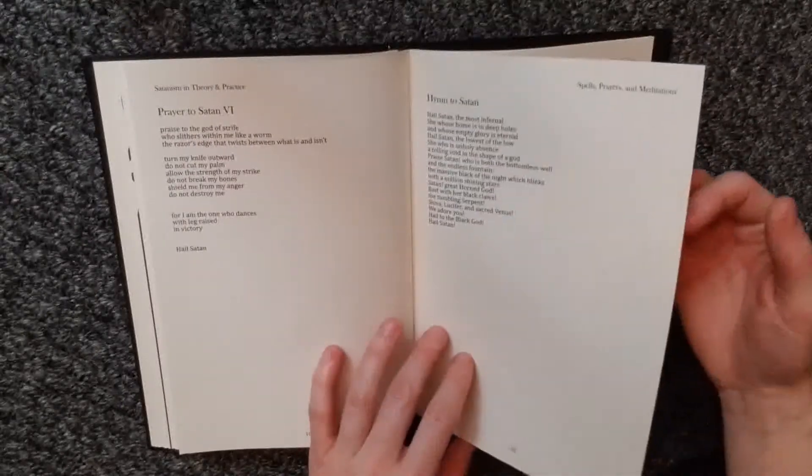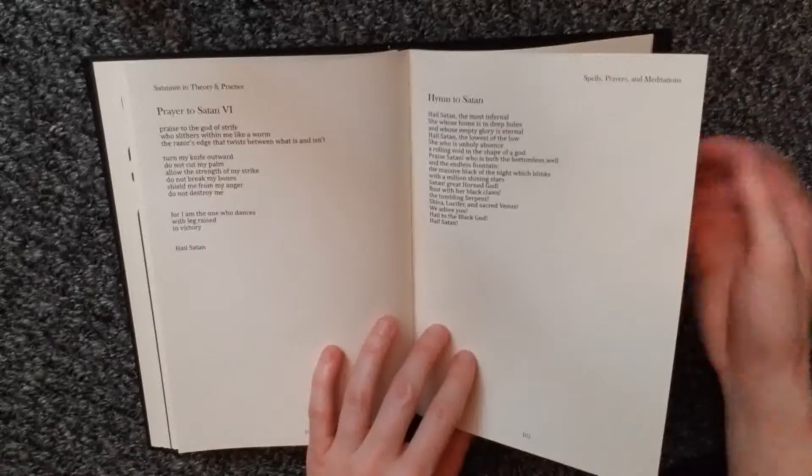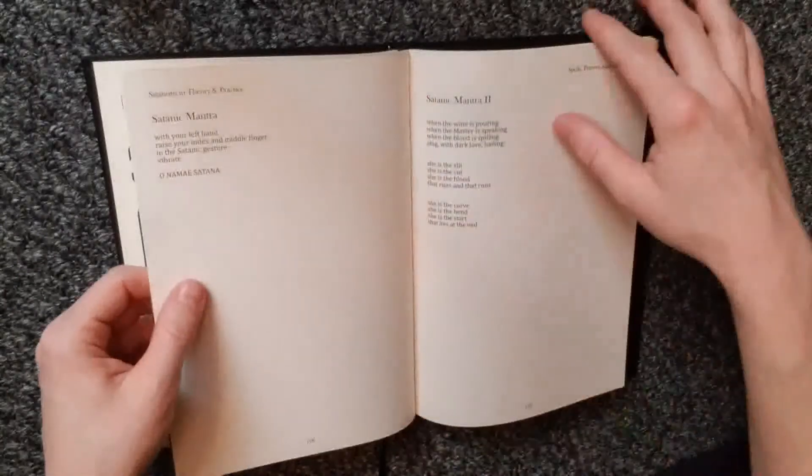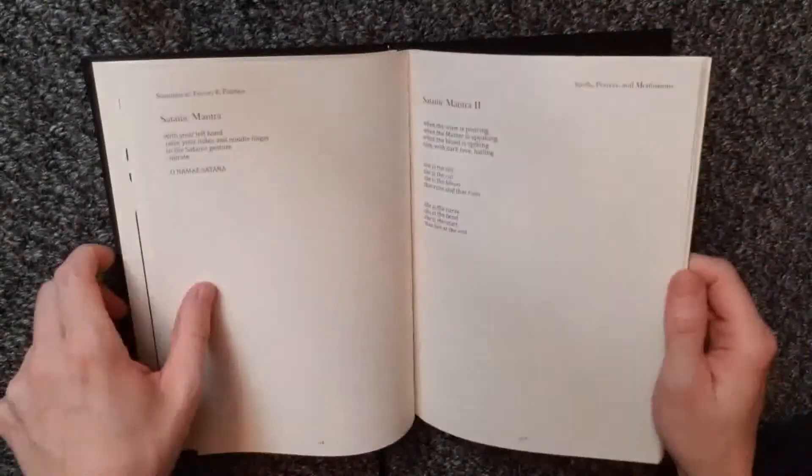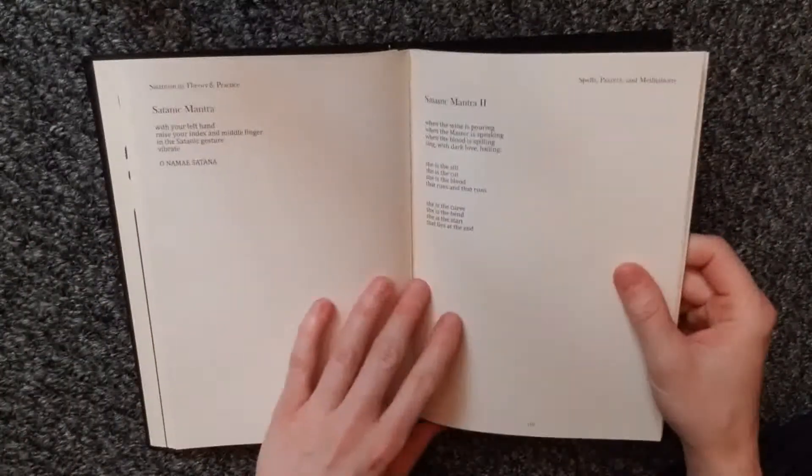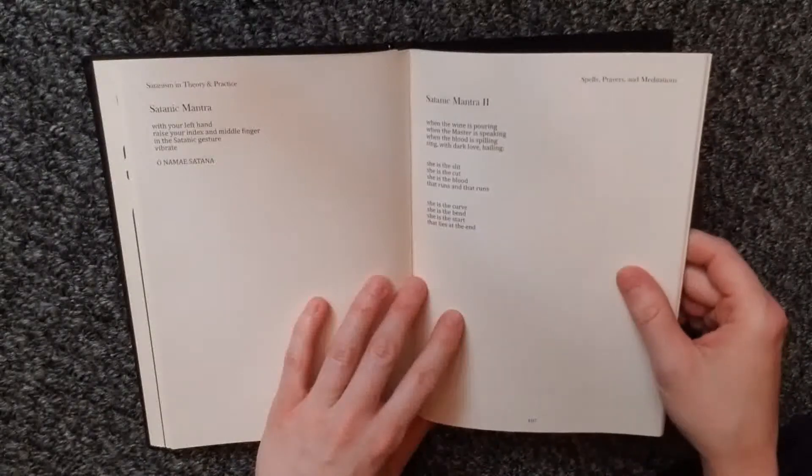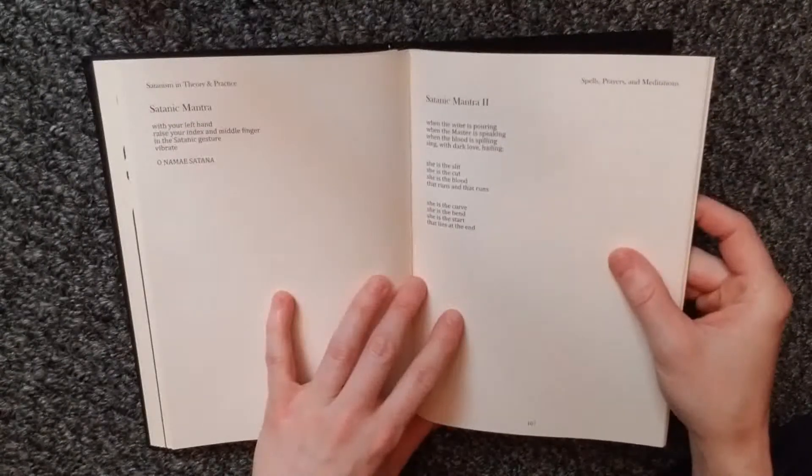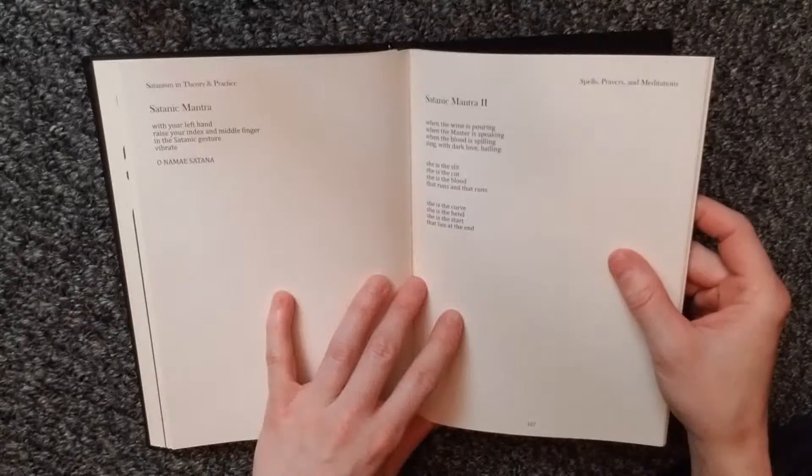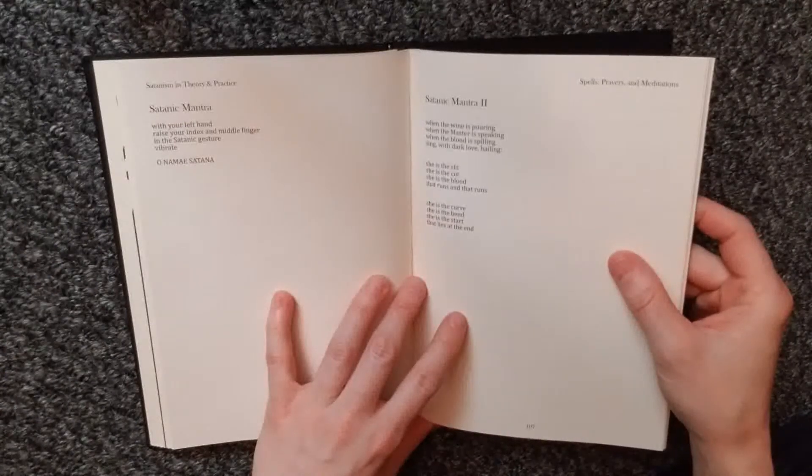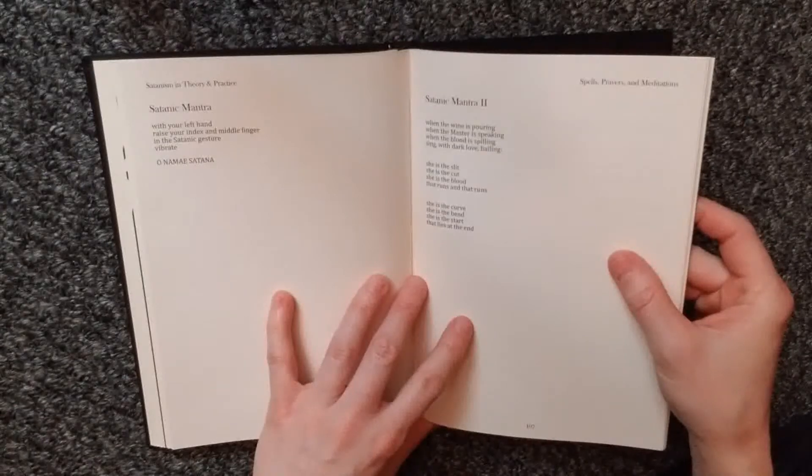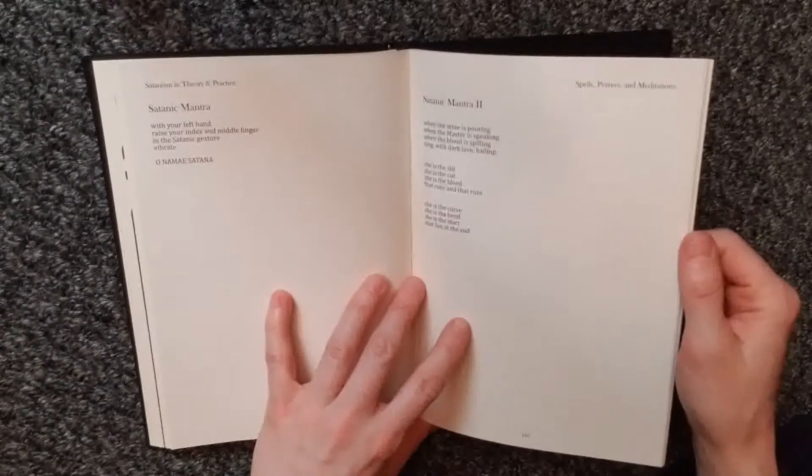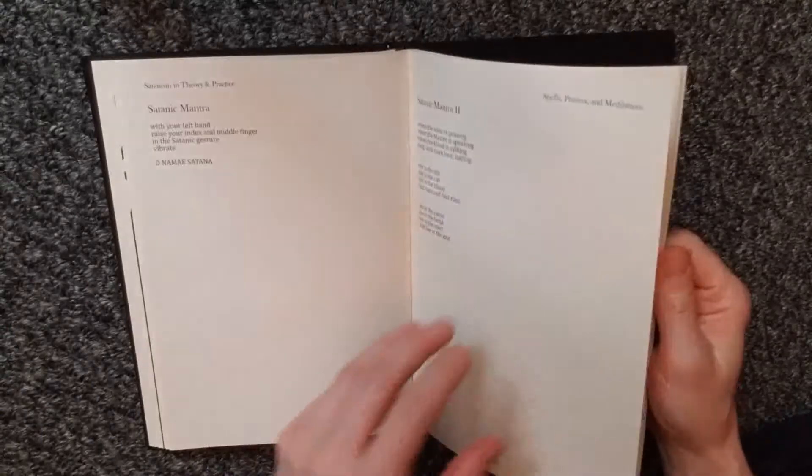That's the first time I think I've seen in print Satan being referred to as female. I thought I was like the first person to do that. That's pretty cool. Somebody else has done that. Awesome. Satanic mantra two. When the wine is pouring, when the master is speaking, when the blood is spilling, sing with dark love, hailing. She is the slit. She is the cut. She is the blood that runs and that runs. She is the curve. She is the bend. She is the start that lies at the end. Sort of Ouroboros-esque there.